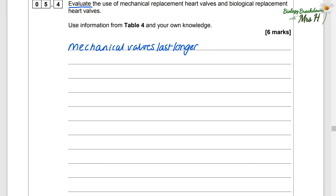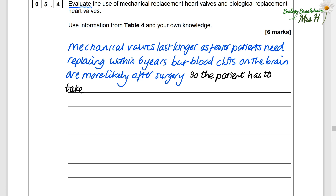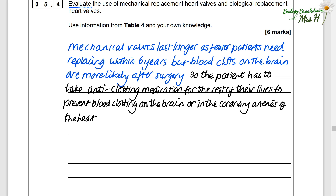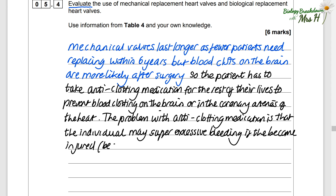Mechanical valves last longer as fewer patients need replacing within six years, but blood clots on the brain are more likely after surgery. The patient has to take anti-clotting medication for the rest of their lives to prevent blood clotting on the brain or in the coronary arteries of the heart. The problem with anti-clotting medication is that the individual may suffer excessive bleeding if they were to become injured, because they can't clot their blood.